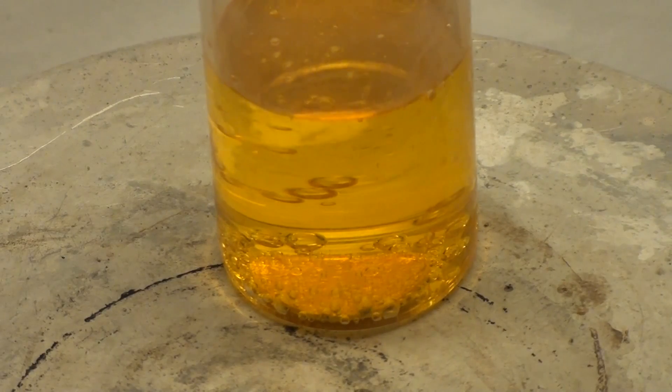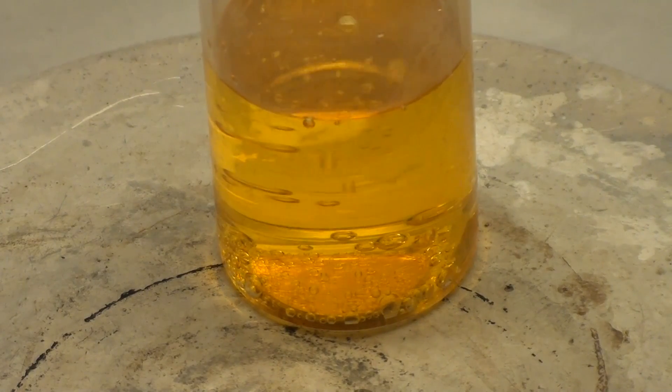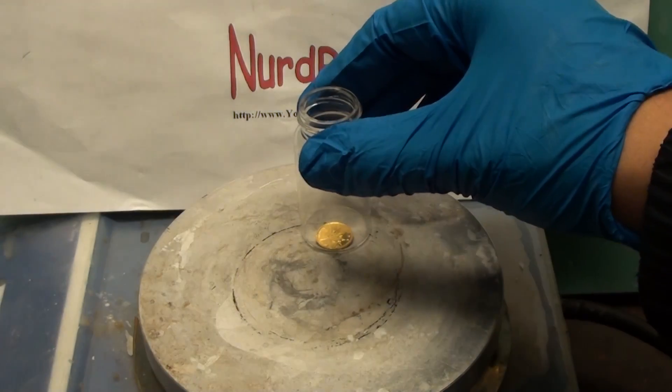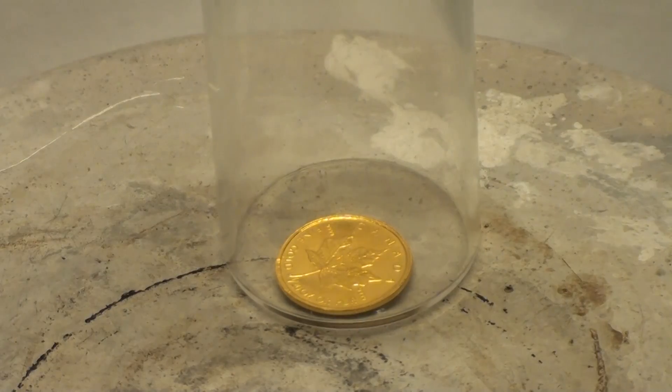Greetings fellow nerds. In this video we're going to dissolve a gold coin in acid. Here is the coin. It's a 1/20th troy ounce Canadian maple.